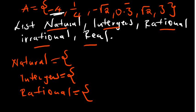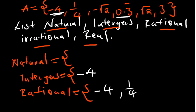One over four qualifies as a rational number because it can be expressed in the form a over b. It is not an integer, since integers only include whole numbers both positive and negative. Negative root of 2 is not a natural number, not an integer, and not rational — it is irrational because it is an imperfect square. And 0.3 recurring is not a natural number, not an integer, but it is rational because we can express it in the form a over b. Root of 2 is also irrational.